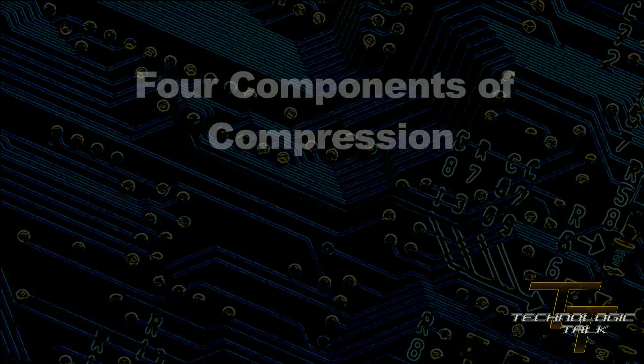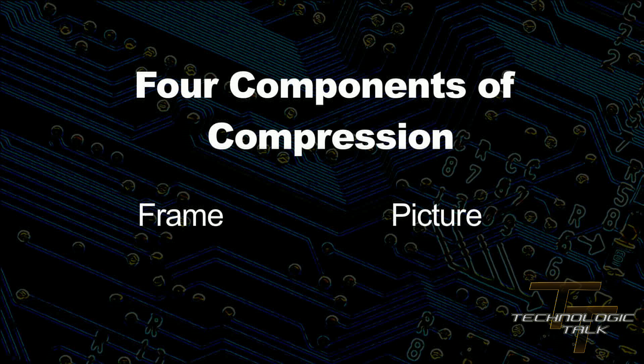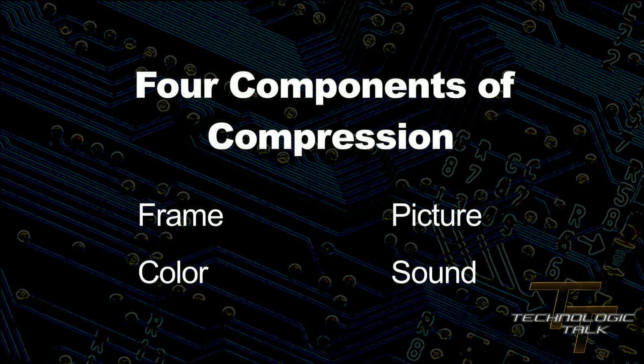The next question you might ask is: in this compression, what information is discarded? There are many components that can be discarded from a file, but overall these components can be divided into four categories. These four categories of video compression are frame, picture, color, and sound.